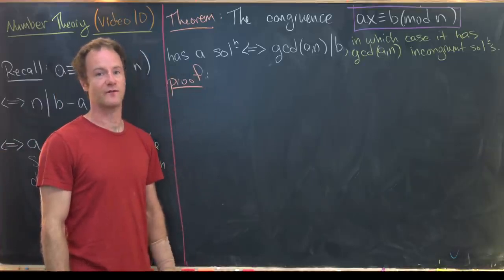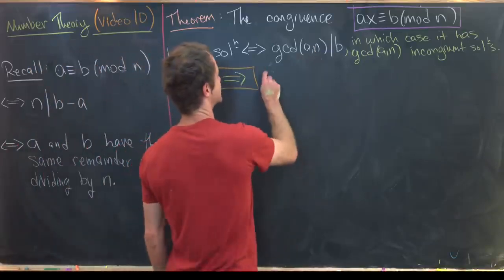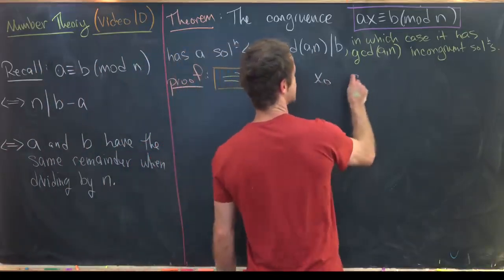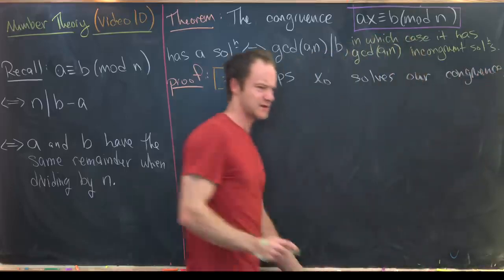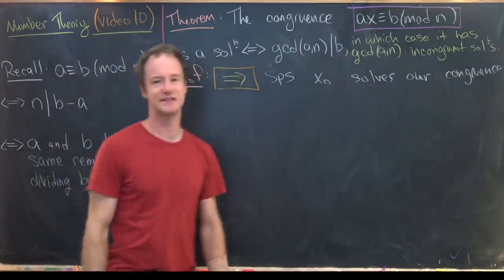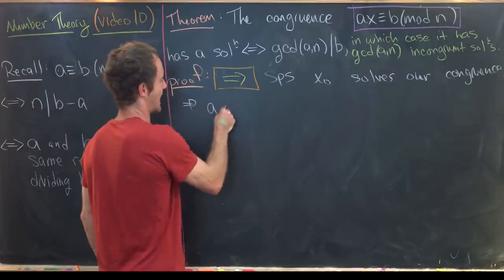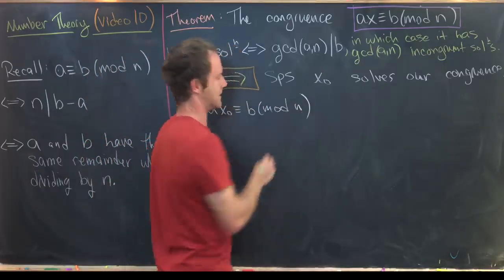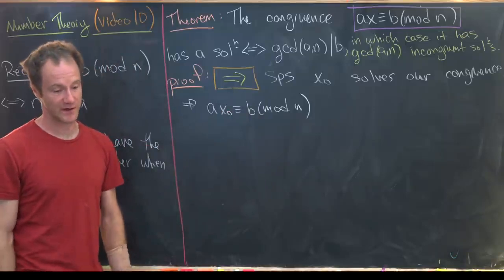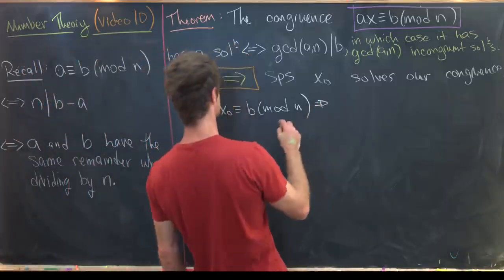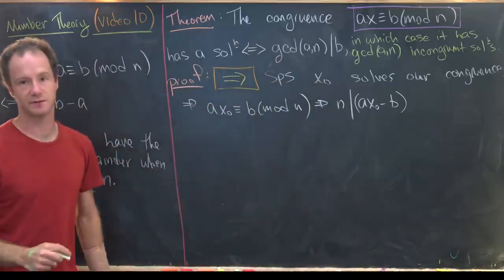Let's start with the forward direction of the proof. We suppose that x₀ solves our congruence — x is a variable, but x₀ is the solution. So we have ax₀ ≡ b (mod n). From here we move to an equation within the integers: n divides ax₀ minus b, by the definition of congruence modulo n.